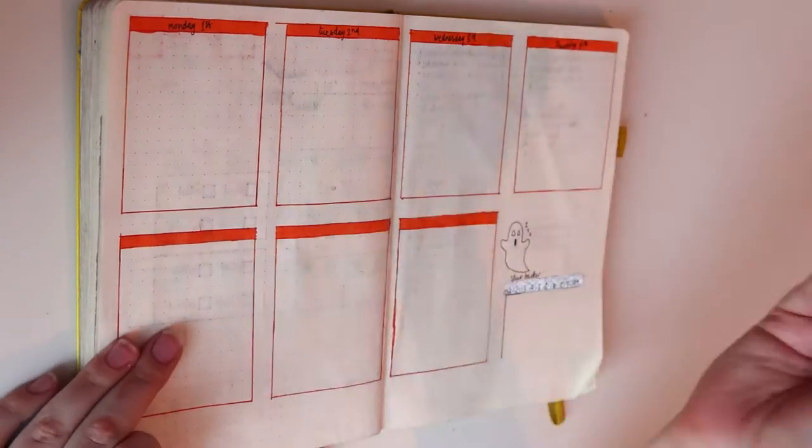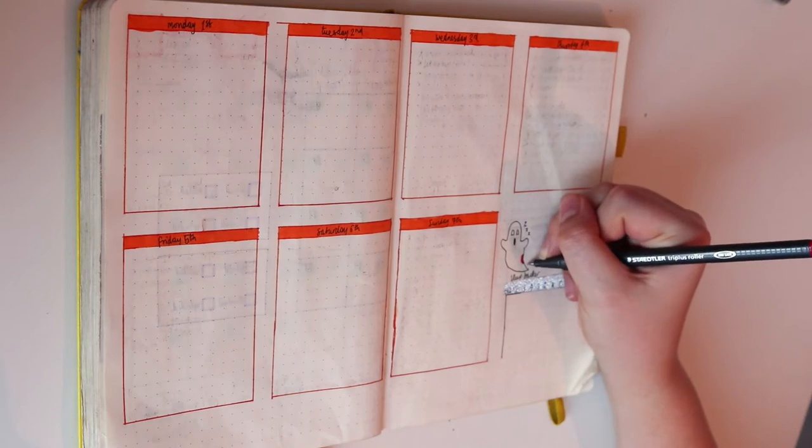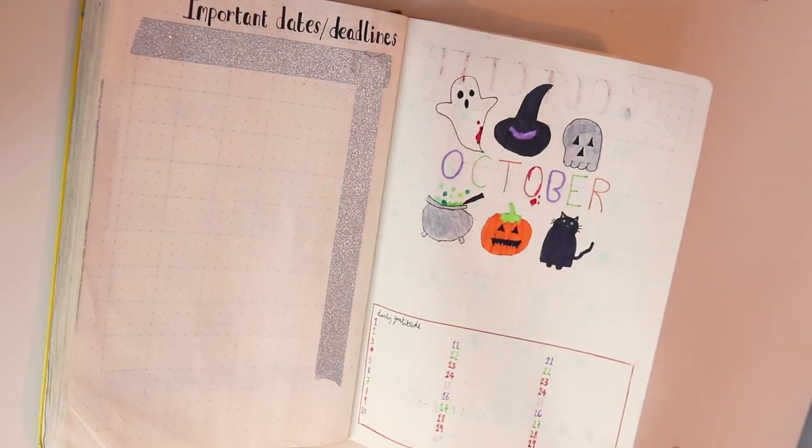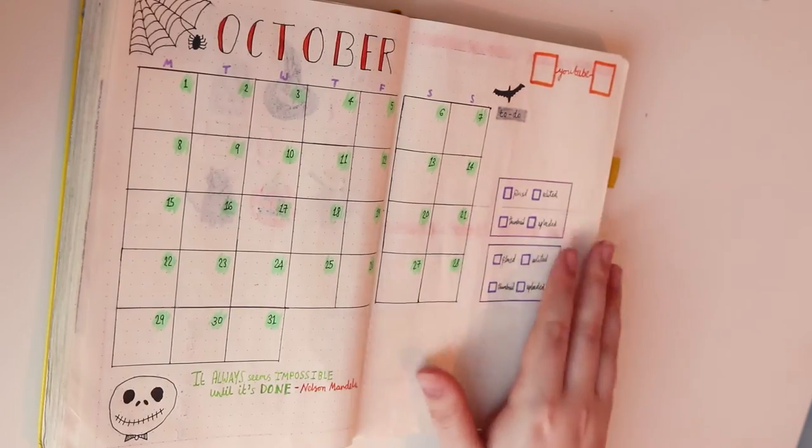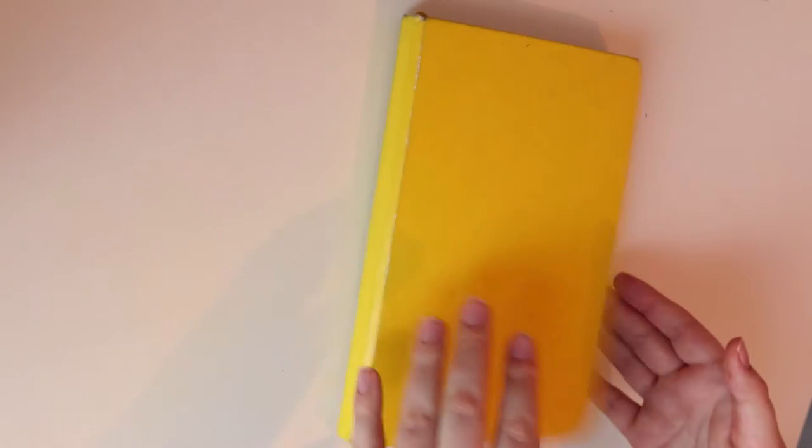So that's my October bullet journal. I'm very happy with it especially the title page. I really want to incorporate more into my journal but I'm lacking inspiration so if you have any ideas of things I can add let me know. Thanks for watching and see you next time. Bye!